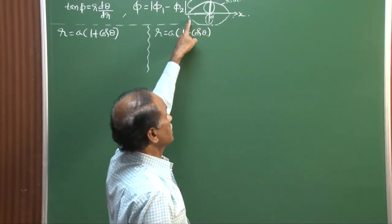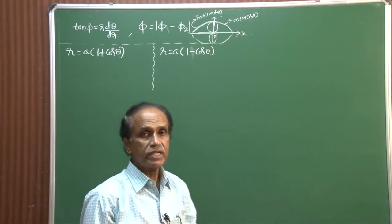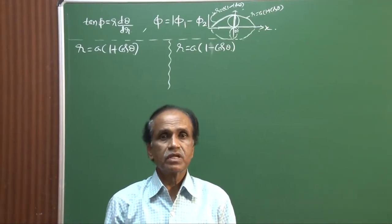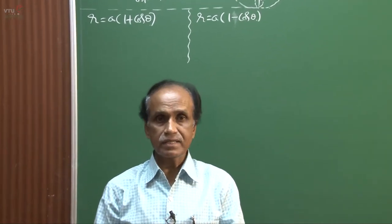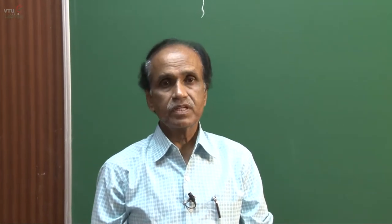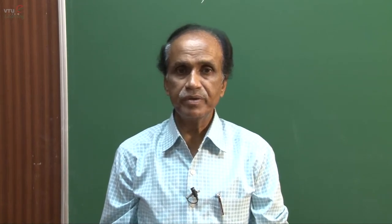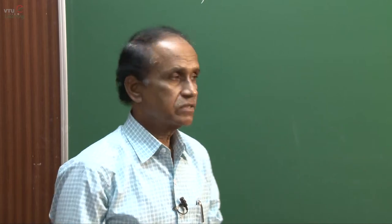Dear students, I will complete the solution of the previous problem, that is the calculation of the angle between two curves. They are polar curves. One is a cardioid with respect to the positive direction of the x-axis, and another one is also a cardioid with respect to the negative direction of the x-axis. These two curves are already familiar from the derivative of arc length and radius of curvature discussions. This is one pair of standard curves.